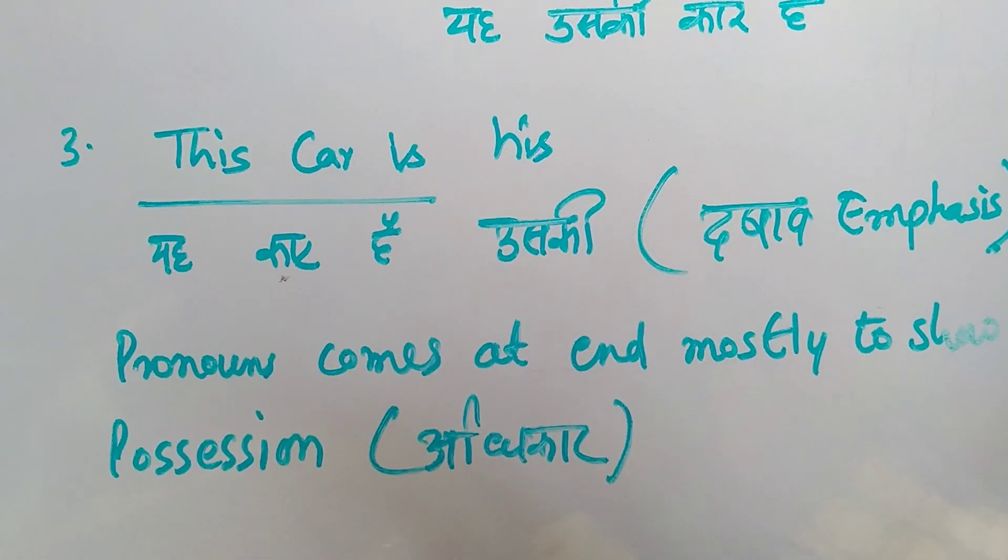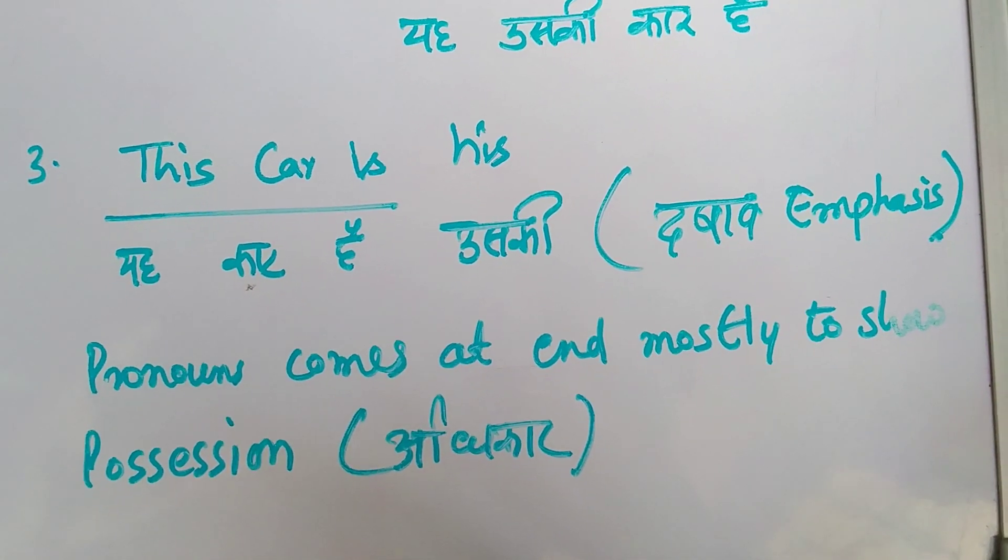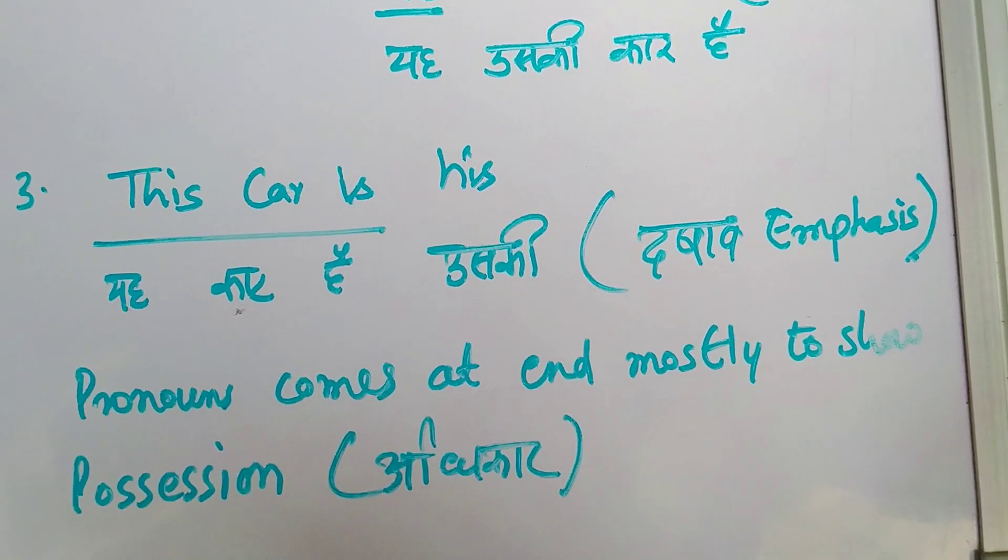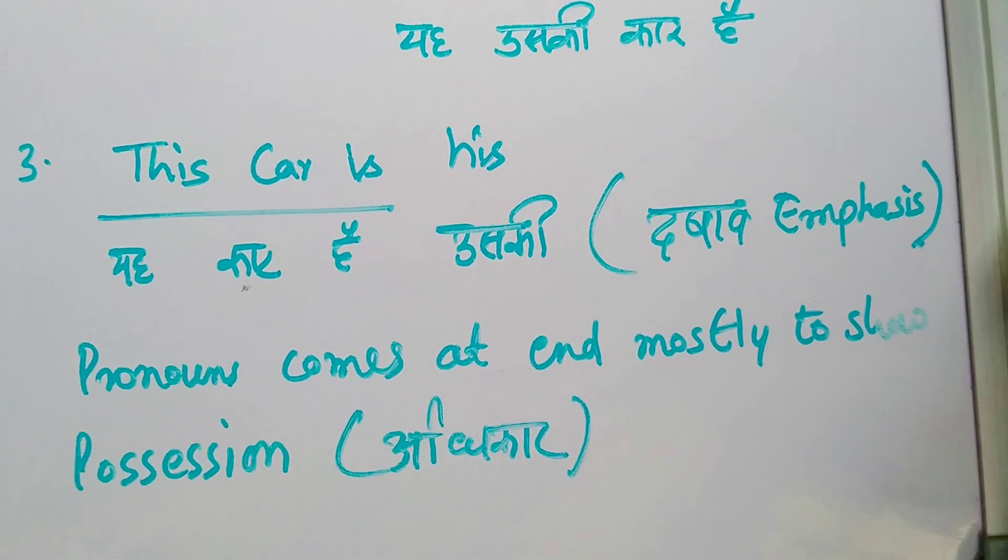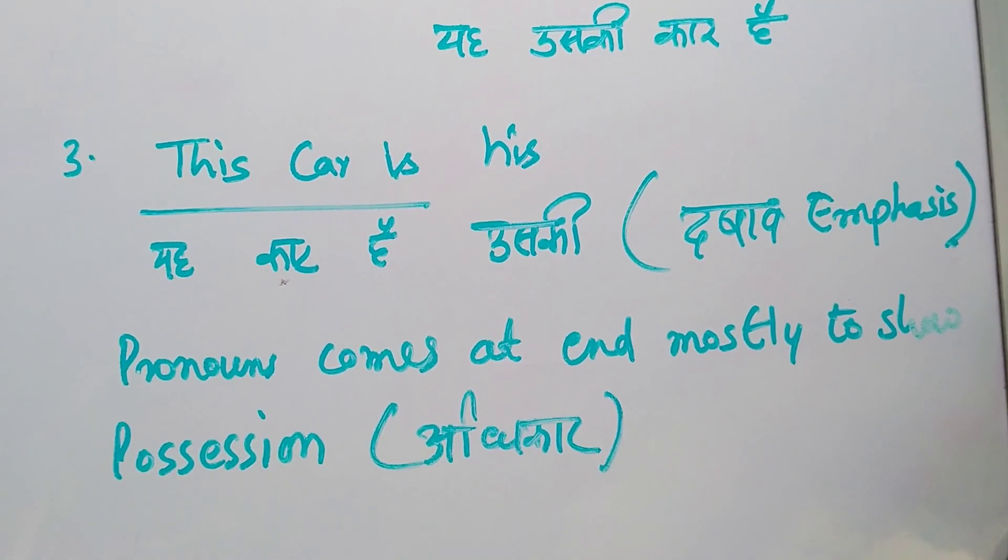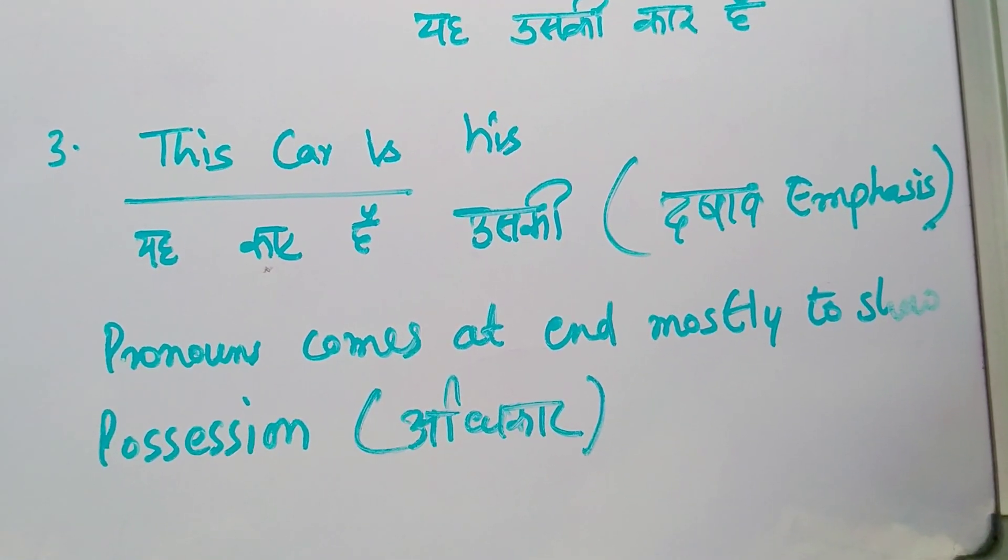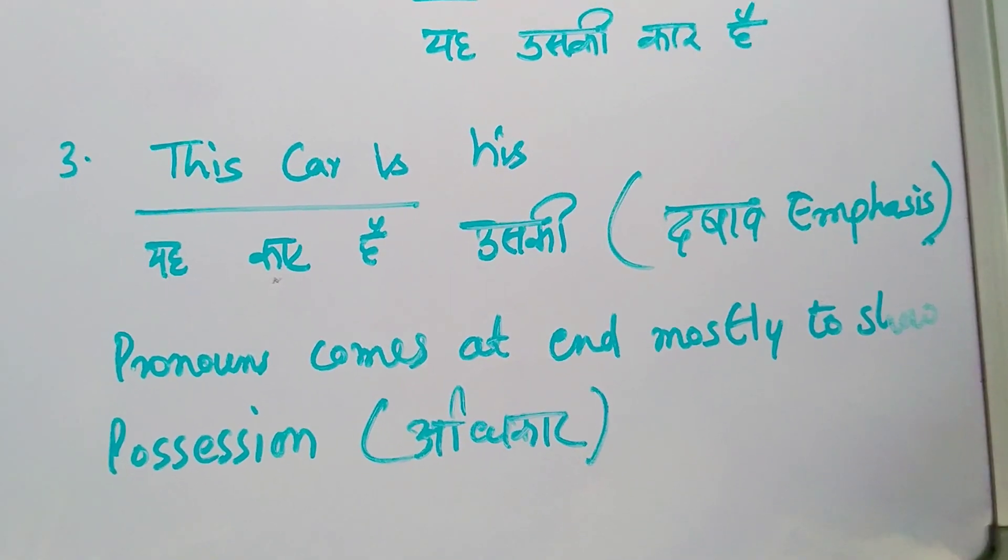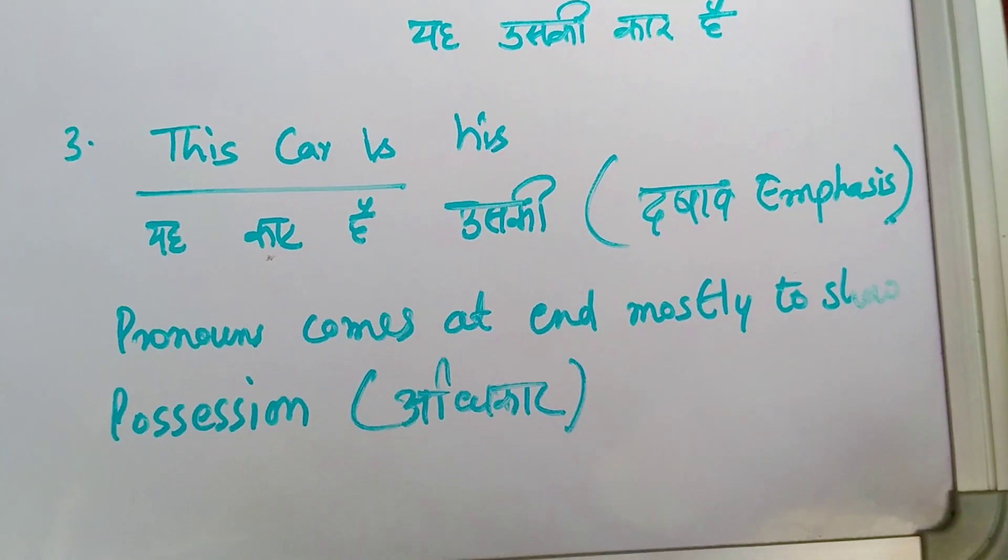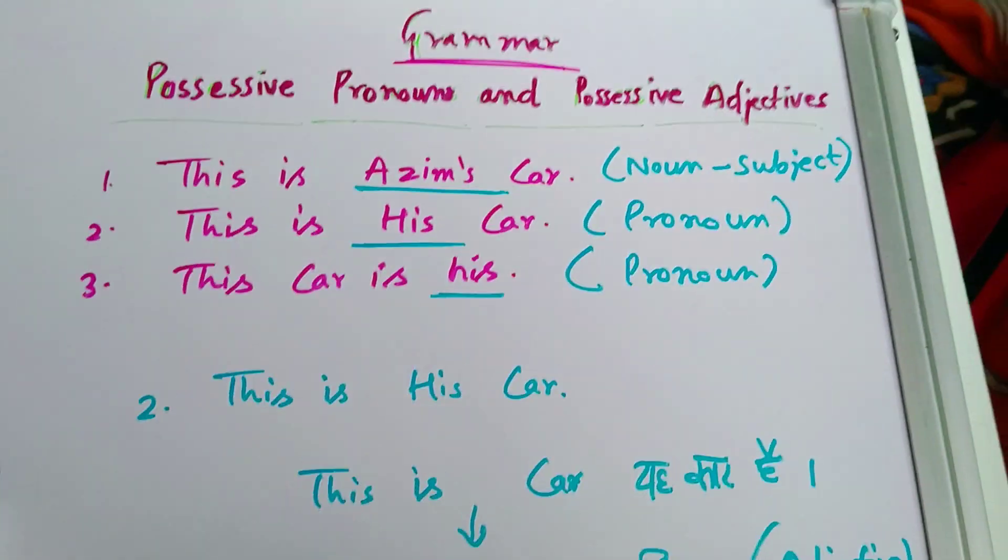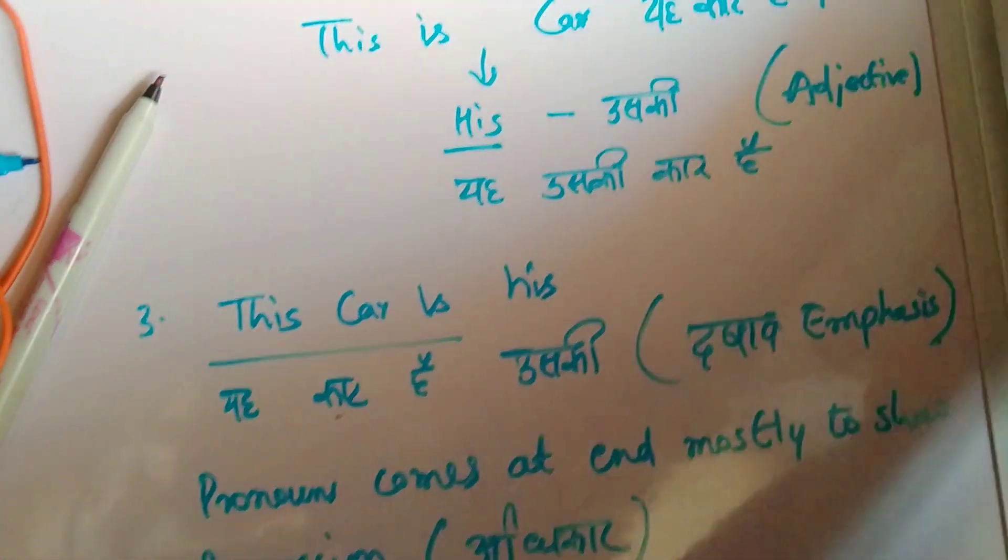Let's see the third sentence. This car is his. If I don't see his, this car is - his word is showing an emphasis. You are showing emphasis on this sentence that this car is whose car. So mostly your pronouns, if they come to the end of your sentence like his, ours, theirs, yours, you should understand that there is a possessive pronoun. Pronoun comes at the end mostly to show possession, whose car this is. These are the three main topics which if you have understood, then this whole chapter is very easy for you.